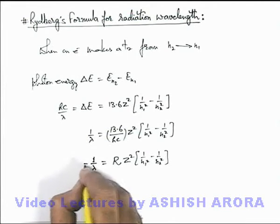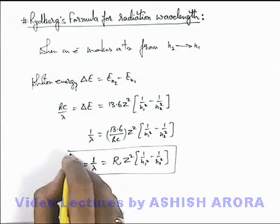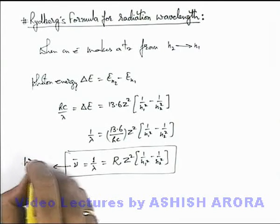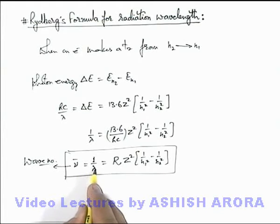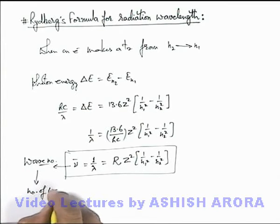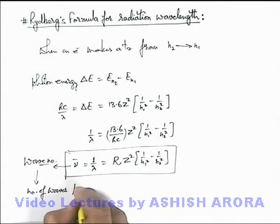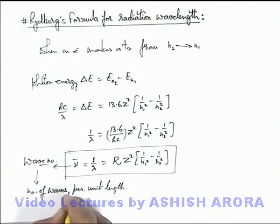And this 1 by lambda, reciprocal of wavelength, we can write as nu bar, where this nu bar is written as wave number. As in this situation lambda is the length of a wave, wavelength, so 1 by lambda will give us number of waves per unit length.